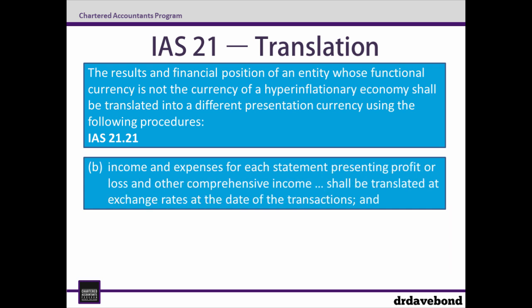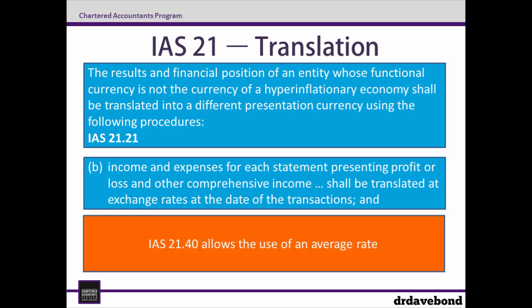Turning to income and expenses, these get translated at the exchange rates at the date of the transactions, which makes sense because it would seem strange to use the exchange rate for, say, the 15th of January when the transaction took place on the 25th of September. However, it's important to note that paragraph 40 allows entities to use average rates for the purposes of practicality. What this means for our example is: if the date of the transaction can be ascertained for an income or expense item, use the exchange rate on that particular date; otherwise, use a reasonable average rate.